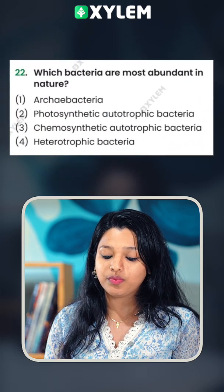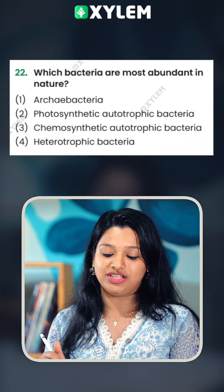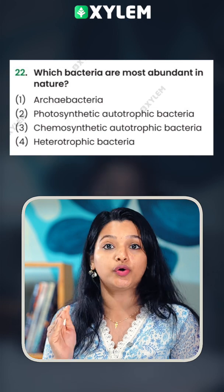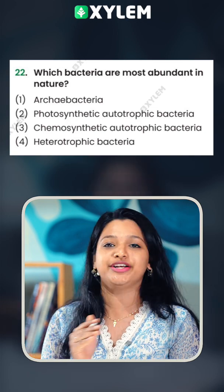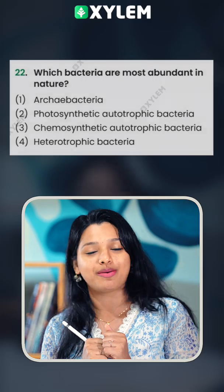Which bacteria are most abundant in nature? Options: Archebacteria, Photosynthetic bacteria, Autotrophic bacteria, Chemosynthetic bacteria, or Heterotrophic bacteria? Heterotrophic bacteria is the correct answer.